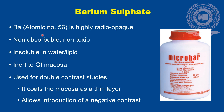Barium has got an atomic number of 56 and its main advantage is that it is highly radio-opaque. Radio-opaque means the thing which appears as white on a plain x-ray, in contrast to the bowel gases which appear as radiolucent, i.e., they appear as black on an x-ray. Barium Sulphate is non-absorbable, non-toxic, insoluble in water and lipids. It is inert to the GI mucosa and is used for double contrast studies as it coats the mucosa as a thin layer, allowing the introduction of a negative contrast.